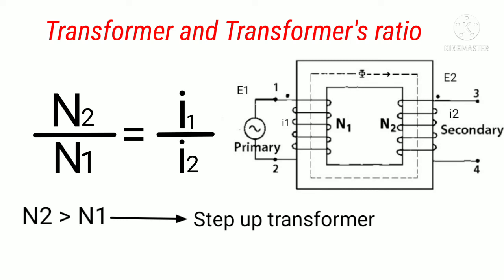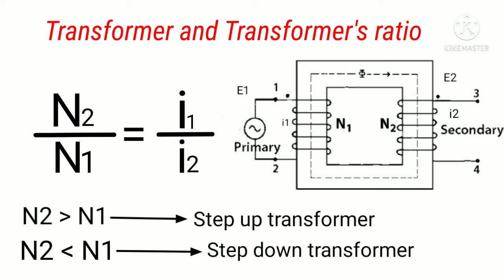Then it is a step up transformer. If N2 less than N1, that means number of turns in secondary coil is less than number of turns in primary coil. Then it is step down transformer.